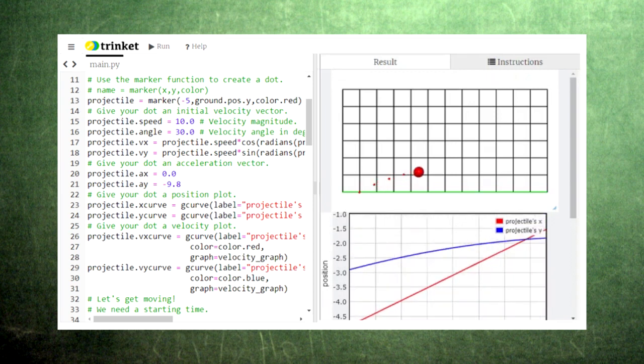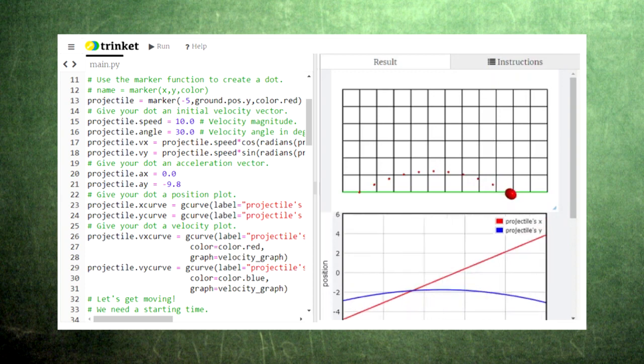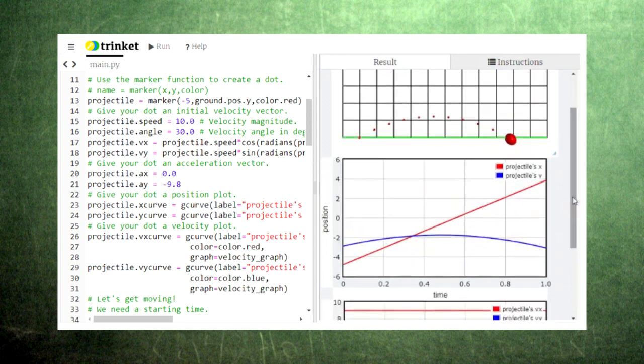When we looked at projectile motion in Episodes 11 and 16, we thought about the downward force of gravity changing the velocity of the projectile. Because gravity points downward, only the vertical component of the projectile's velocity changes.